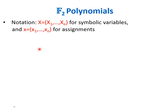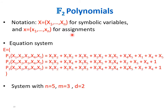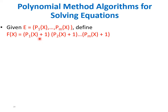Let me first define some notation. I will use capital letters for symbolic variables and lowercase letters for assignments to these variables. As an example, here is an equation system E with n equals 5 variables, m equals 3 equations, and algebraic degree d equals 2.